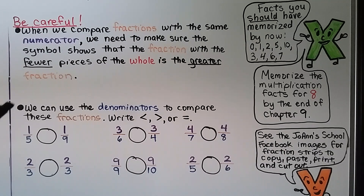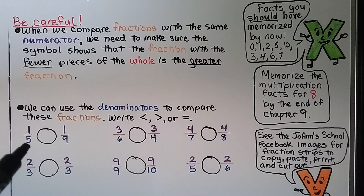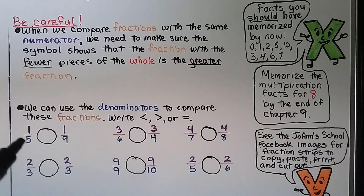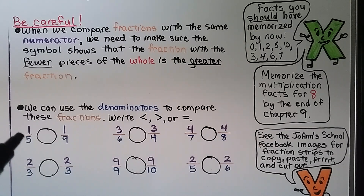We have one-fifth and one-ninth. They're both unit fractions — they both have one as a numerator. We look at the denominator: five is a much lower number than nine. That means this whole was split into five pieces and this whole into nine pieces, so each piece of one-fifth is larger. One-fifth is greater than one-ninth.